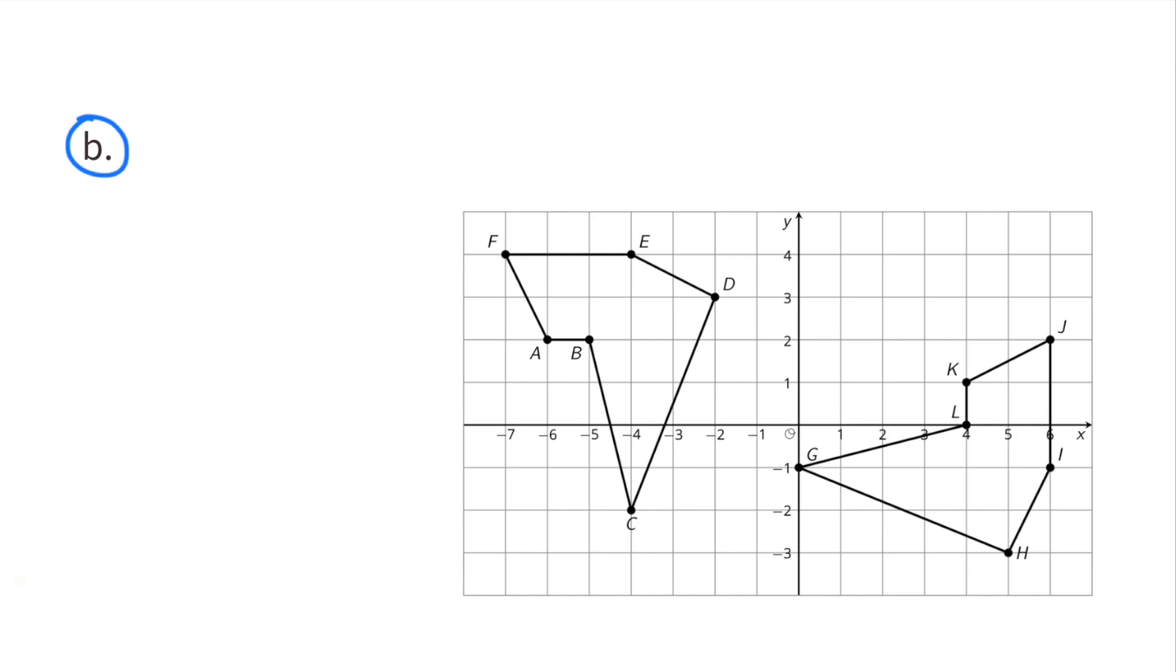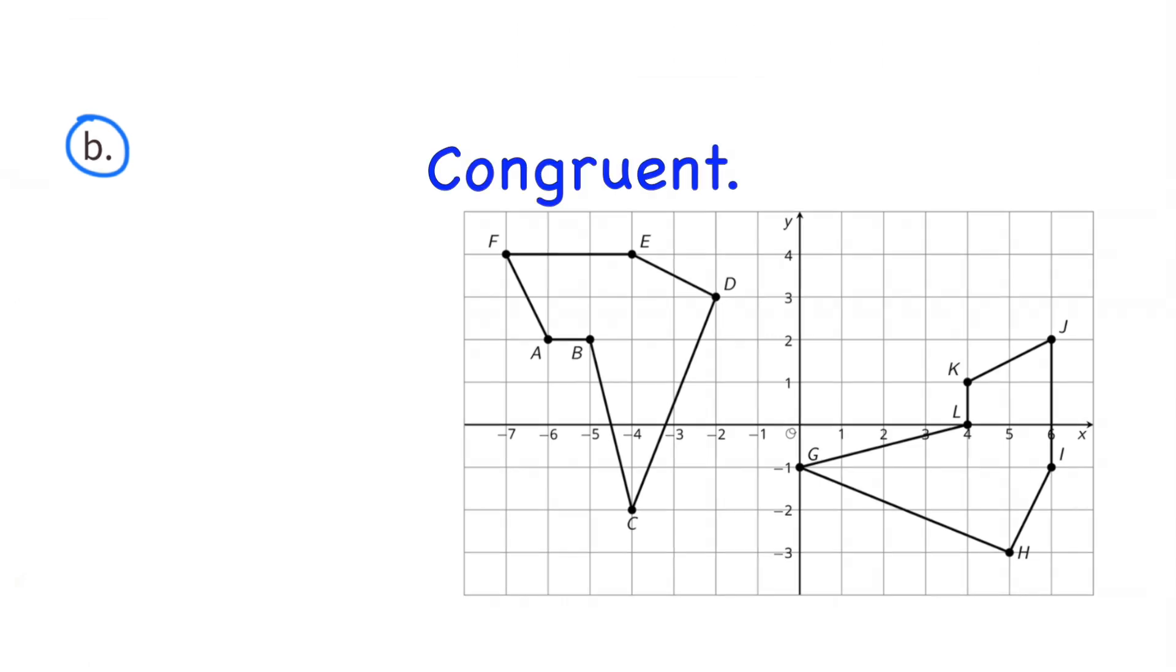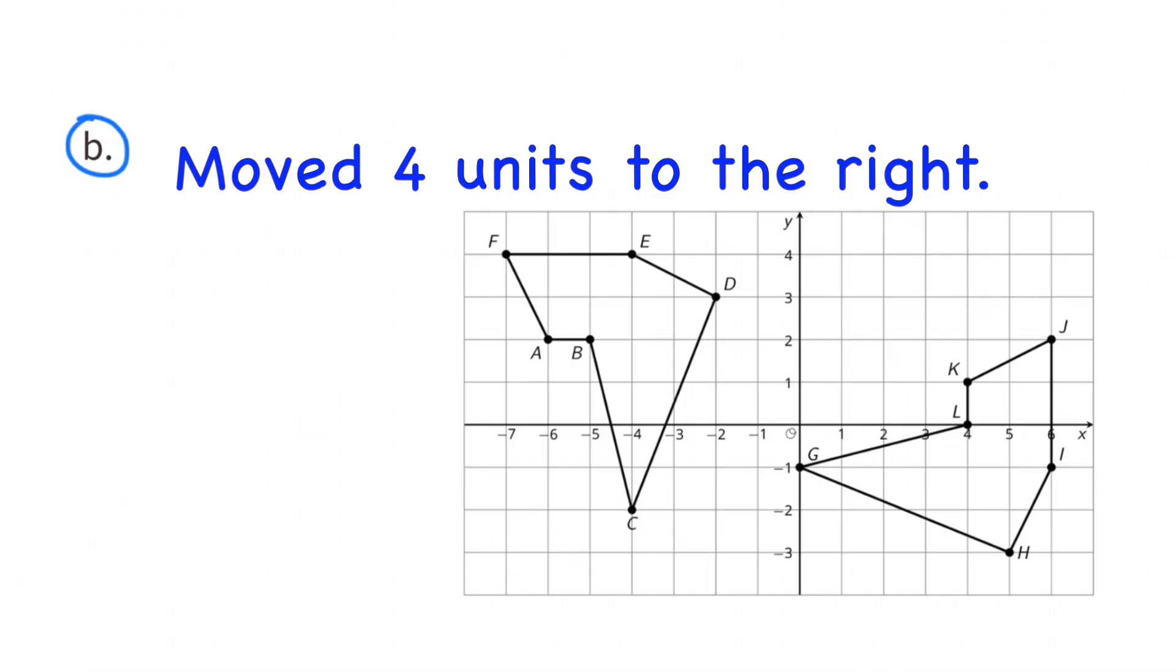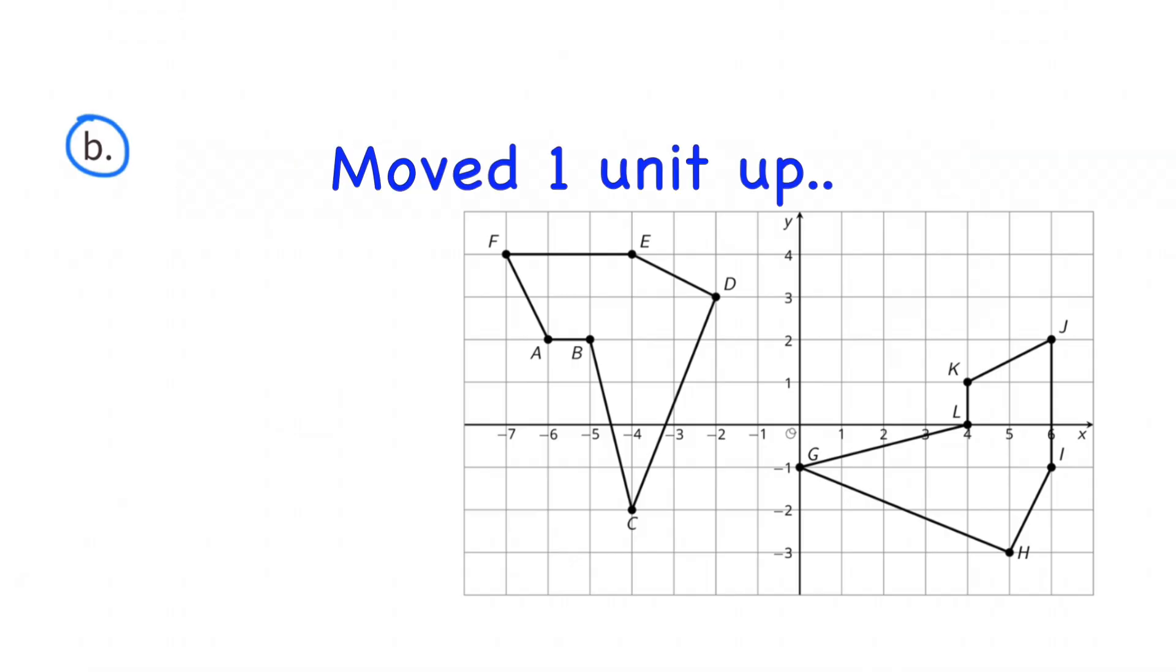B. These shapes are congruent. The original shape rotated 90 degrees about C. It moved 4 units to the right and it moved up 1 unit.